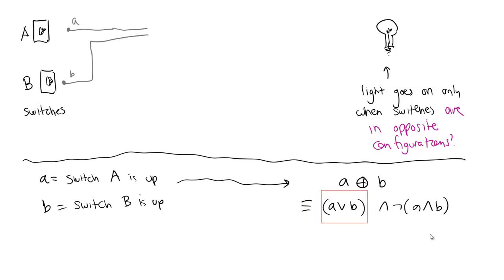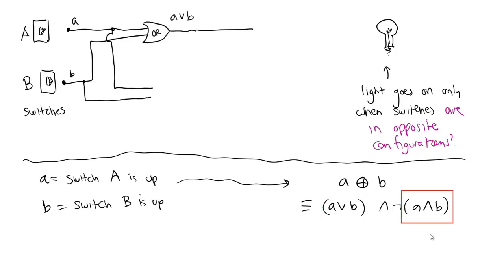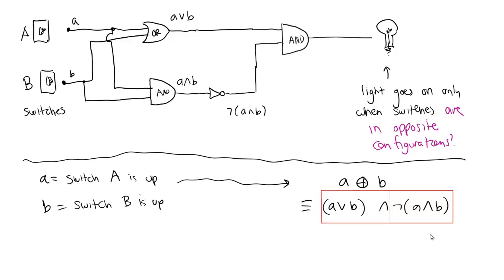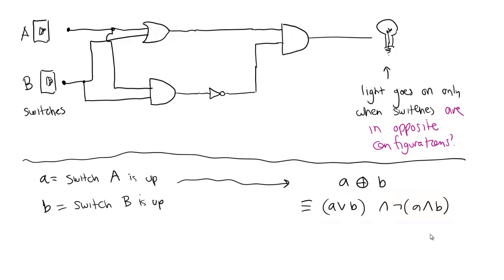We can turn this propositional logic into a circuit. Make circuit tracks for A and B, run them through an OR gate. Then make two branches from A and B and run those through an AND gate to get A AND B, then negate it through an inverter to get NOT(A AND B). Now I have NOT(A AND B) on the bottom line and A OR B on the top line; run those through another AND gate. That gives a circuit that lights up when the two switches are in opposite positions.